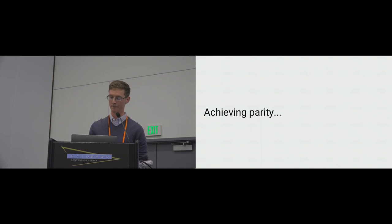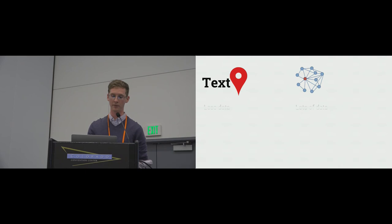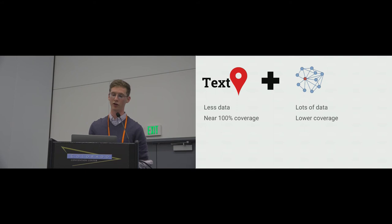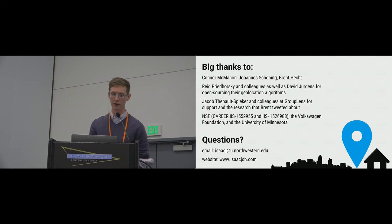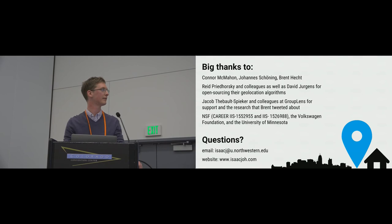Finally, how do you achieve parity in these algorithms? Why not just use network-based methods? Well, they're not a panacea. Network-based algorithms require far more data and still can't make predictions for many people who aren't particularly active on these platforms. However, combining text-based and network-based methods has shown promise for improving overall performance. And because these methods respond differently to population bias, a hybrid method also provides greater hope for improving performance in rural areas. Thank you to the many individuals and organizations that assisted with this work.